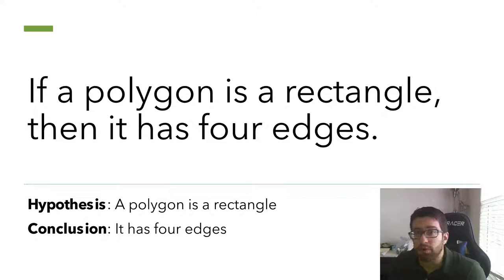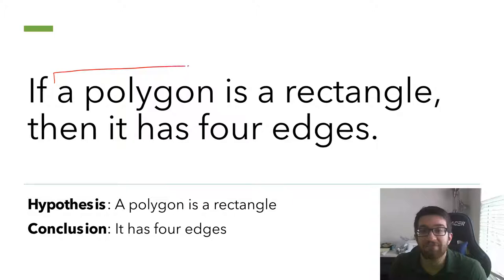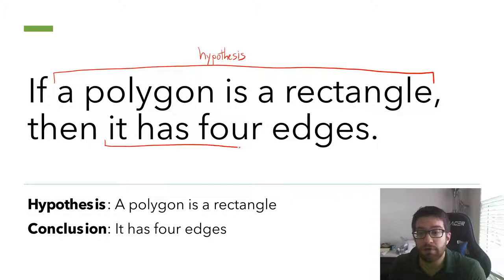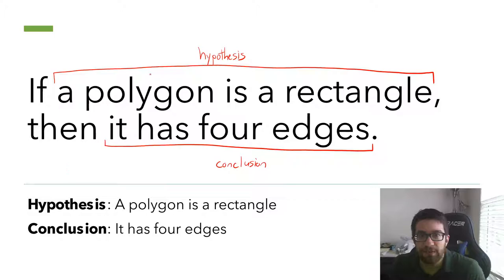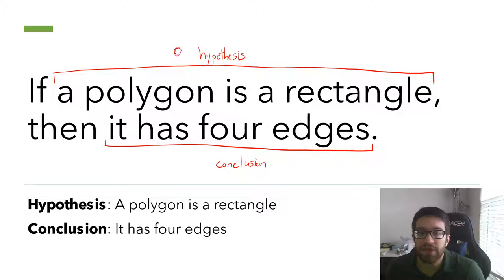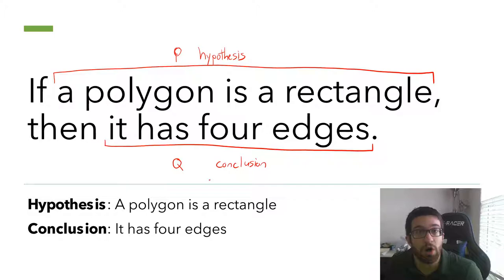This is a conditional statement because it has the words if and then in it. A conditional statement has two parts: the hypothesis, which is the stuff that comes after the if but before a comma, and there's also a conclusion, which is what comes after the word then. We like breaking these off and mixing up the order to create related but slightly different statements — that's really what this unit is all about. In symbolic logic, we use the letter P to represent the hypothesis and Q to represent the conclusion.